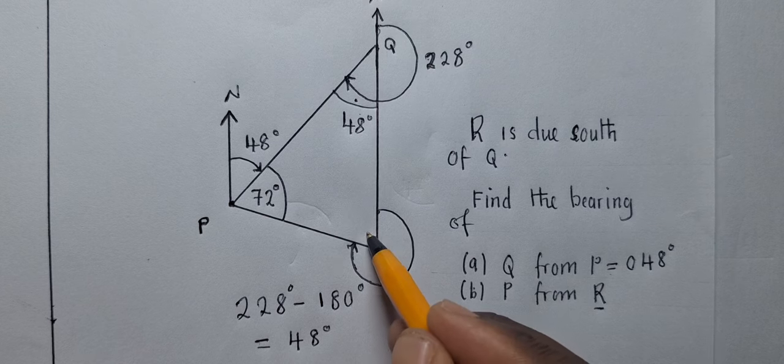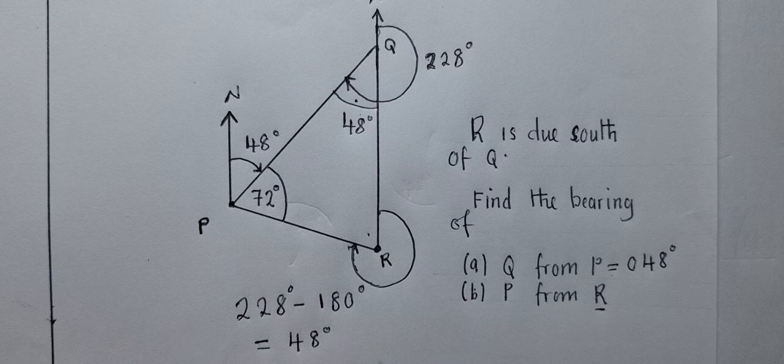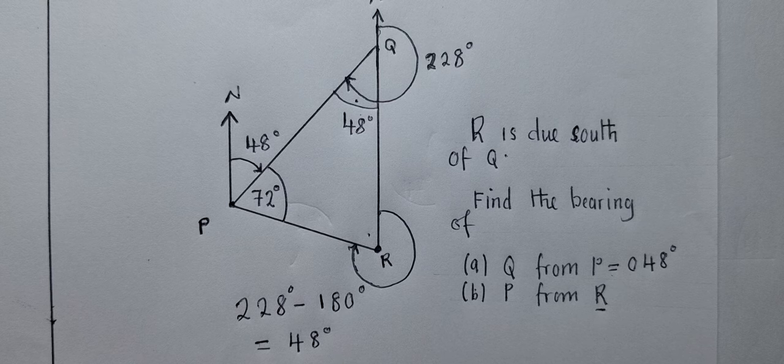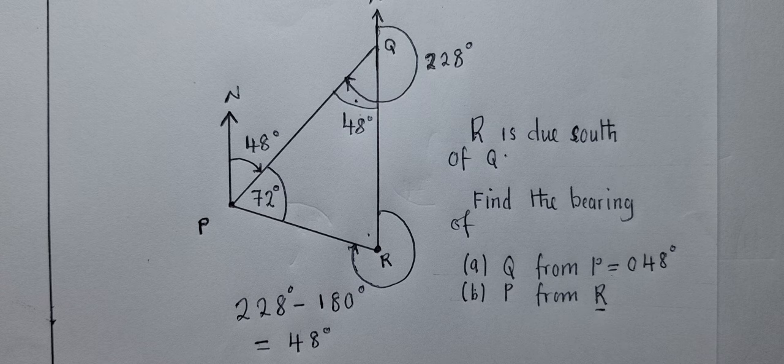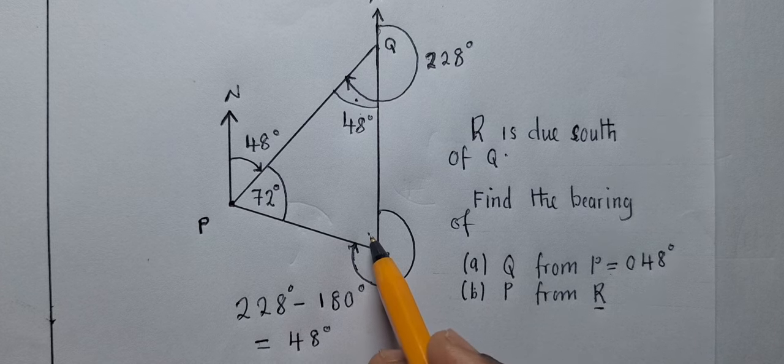So how do we get this bearing? We need to find an angle here and we subtract it from 180. And how do we find the angle here? We also need to use a property. So let me show you the property I'm talking about which we need to use for us to find this angle over here.